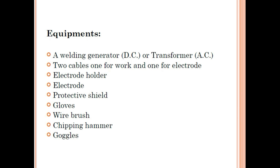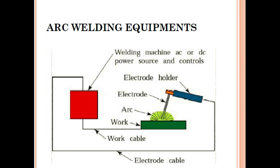The equipment required for welding includes a welding generator (DC) or transformer (AC), two cables — one for the work and one for the electrode — an electrode holder, electrodes, a protective shield, gloves, a wire brush, a chipping hammer, and goggles.